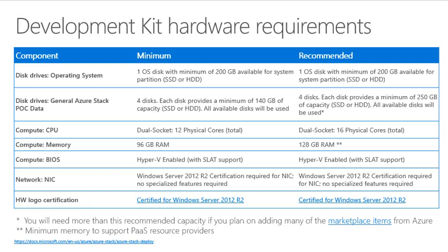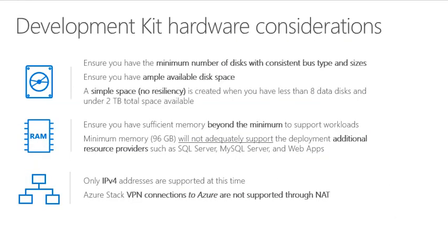For hardware considerations: ensure you have the minimum number of disks, consistent across servers in type and size. A storage space configuration should use fewer than 8 data disks under 2 TB. Also ensure sufficient RAM — the minimum of 96 GB will not adequately support deployment of additional resources, so you need to move up to 128 GB.